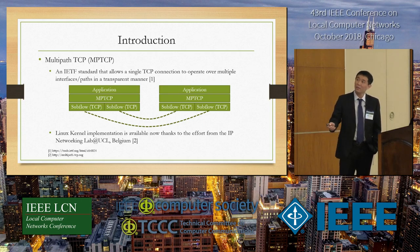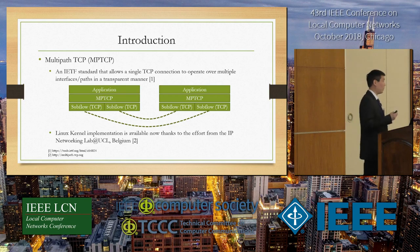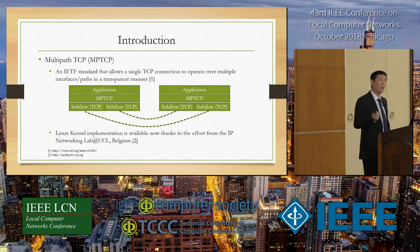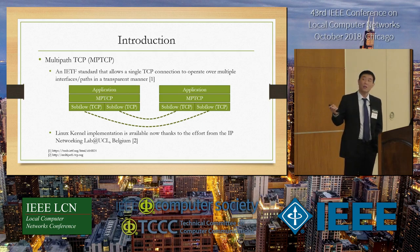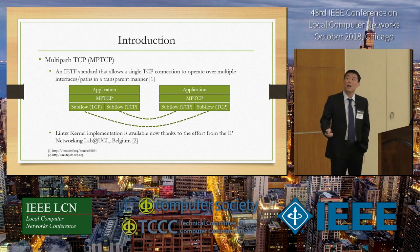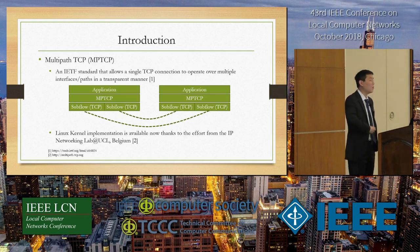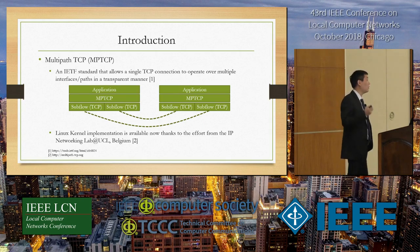As shown in this figure, when MPTCP is enabled, from the application's perspective it only sees a single TCP connection. But the underlying part may consist of a number of parallel sub-flows, and each sub-flow can go over a different interface or path. All those sub-flows are transparent to the application.